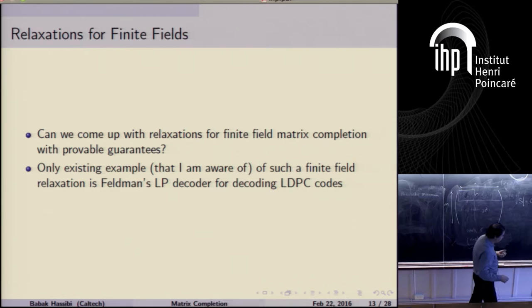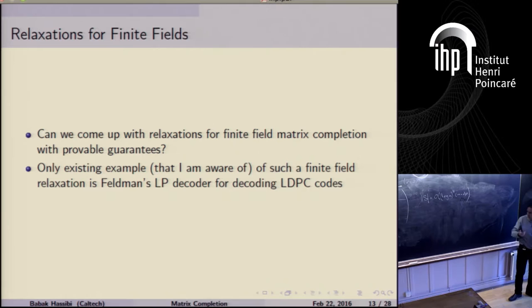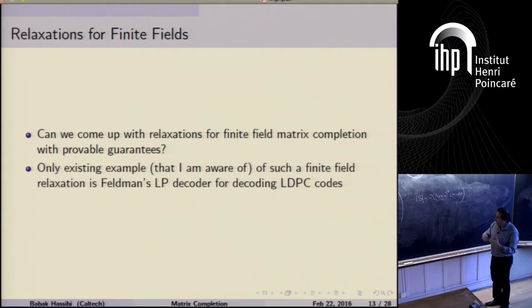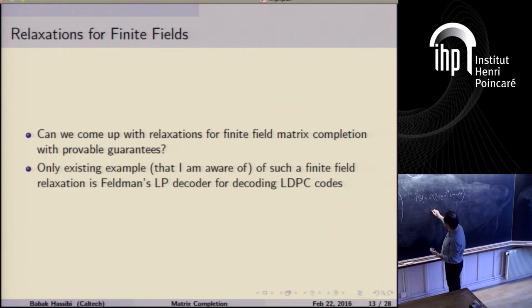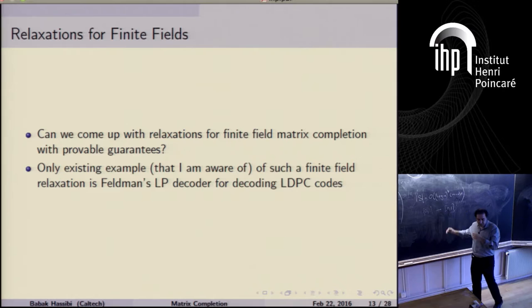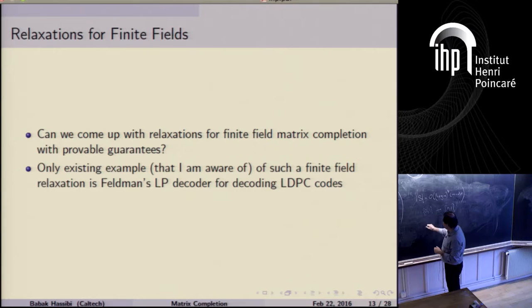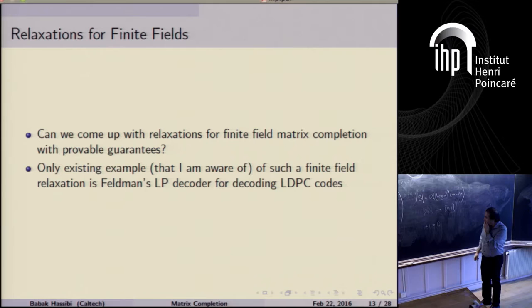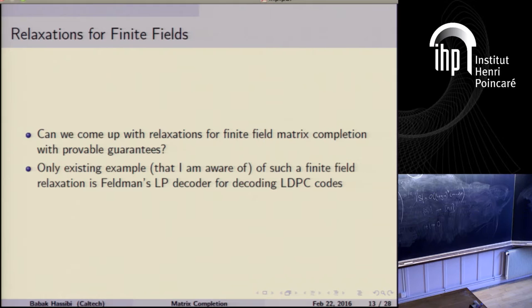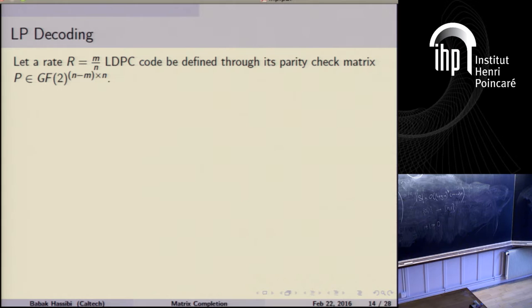We want to do something similar for finite field matrix completion. The difficulty is: how do you relax finite field constraints? For integer programs with 0-1 variables you can relax to [0,1], but finite fields are different — for example in GF(2), 1+1=0, which breaks ordinary real relaxations. You need a more sophisticated relaxation. Fortunately there is at least one example — Feldman's LP decoder — that does this, and we draw inspiration from it.